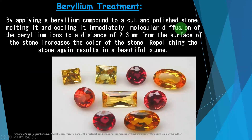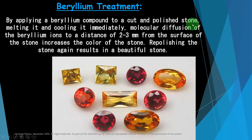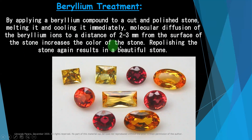Now we are discussing beryllium treatment. This is an illegal treatment. By applying a beryllium compound to a cut and polished stone, melting it, and cooling it immediately, molecular diffusion of beryllium ions penetrates 2 to 3 mm from the surface of the stone, increasing the color. Remember, it is only 2 to 3 mm from the surface. Repolishing the stone again results in a beautiful stone.